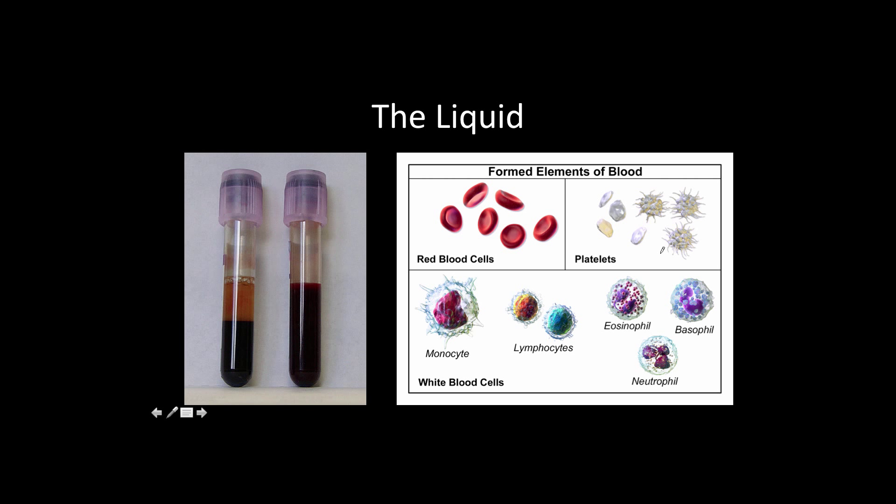Finally, there's the liquid. The liquid is made up of plasma, and you can see the plasma right here. If blood sits long enough or if you put it in a centrifuge, it'll pull all the other cells down to one end, and you end up with this straw-colored liquid that's plasma.